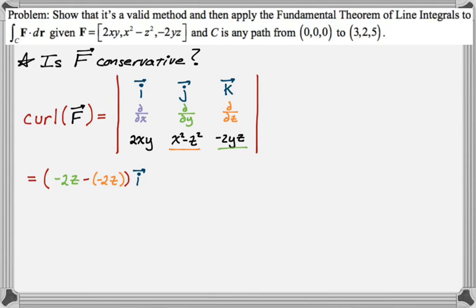Don't forget, it's minus j. So minus parenthesis. Crossing out the row and column, I need partial x of negative 2yz. But there's no x's, so that's zero. I need partial z of 2xy. But again, there's no z, so that's zero. And that's our j component.